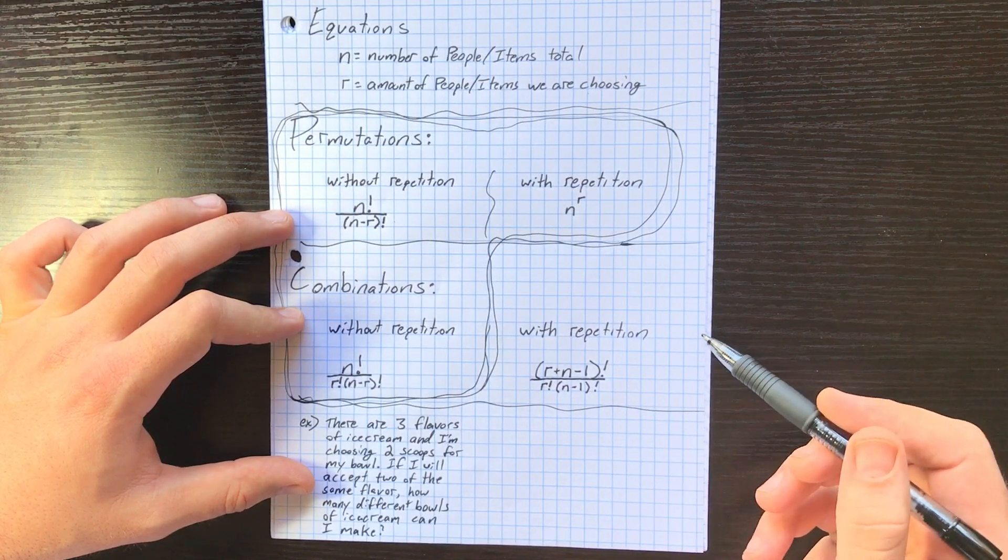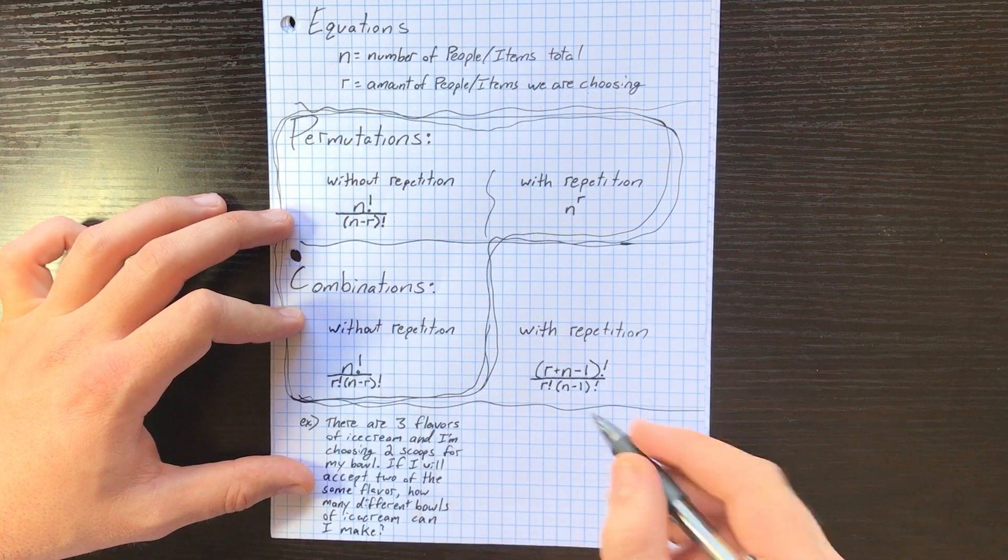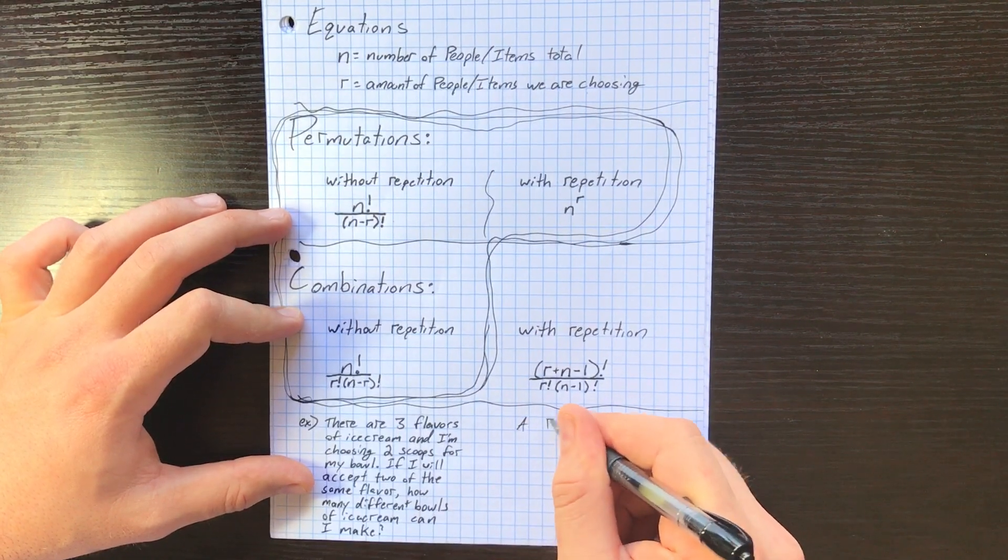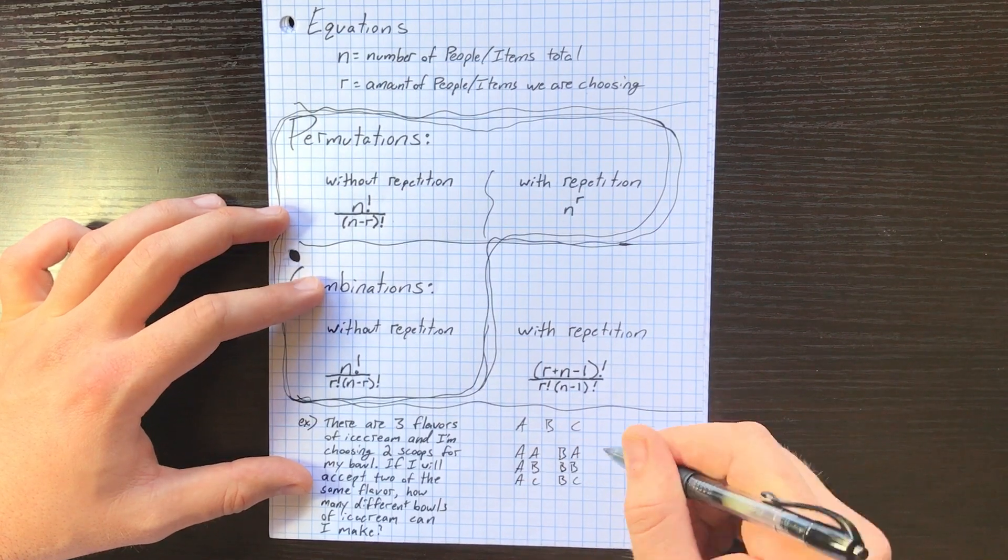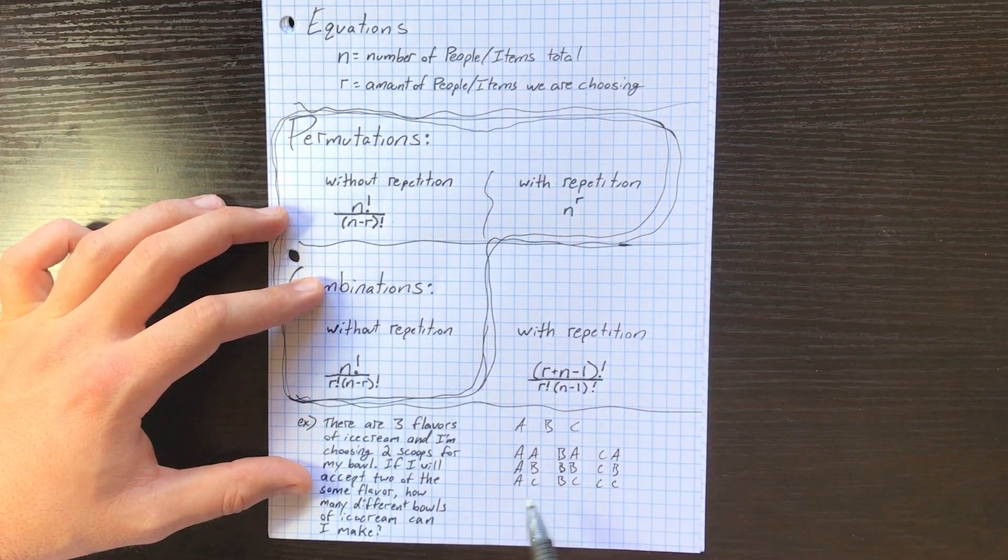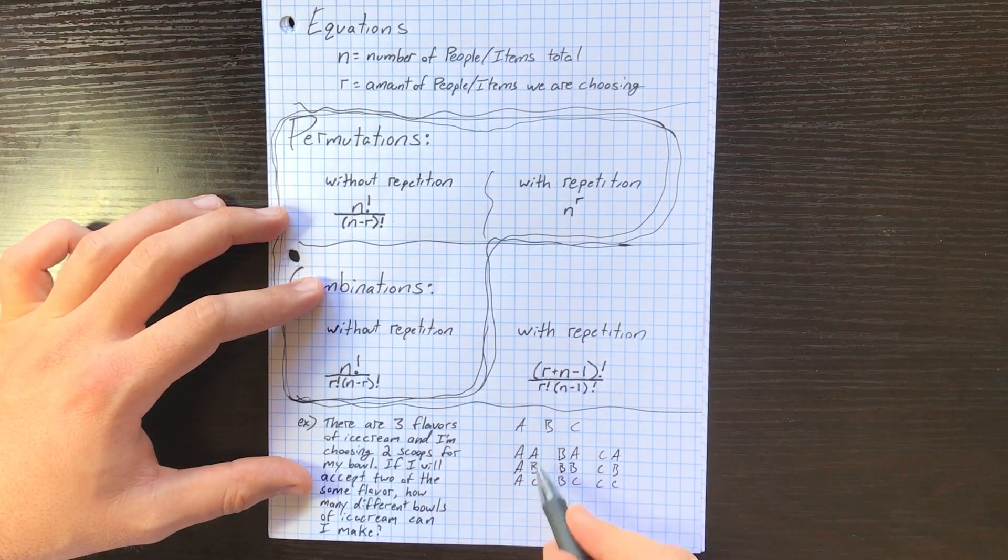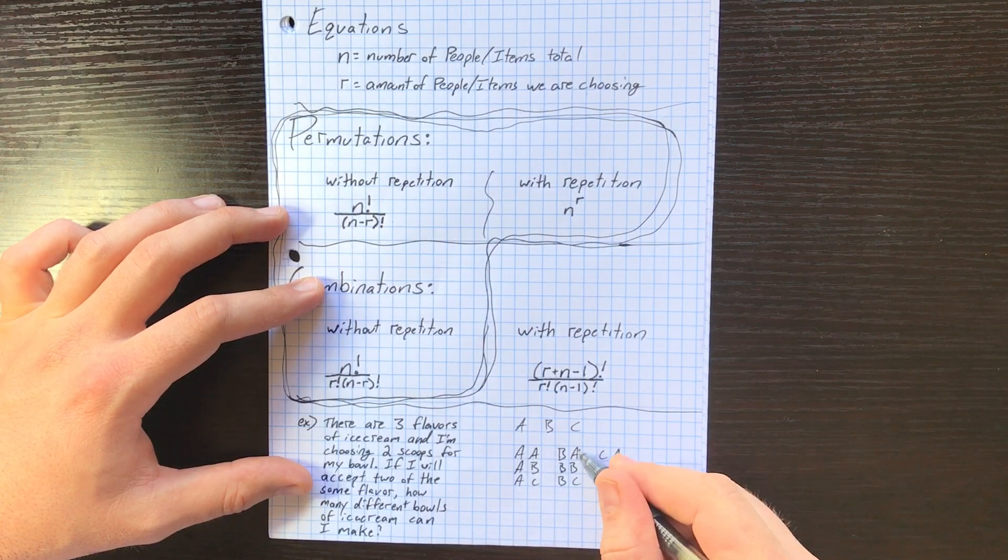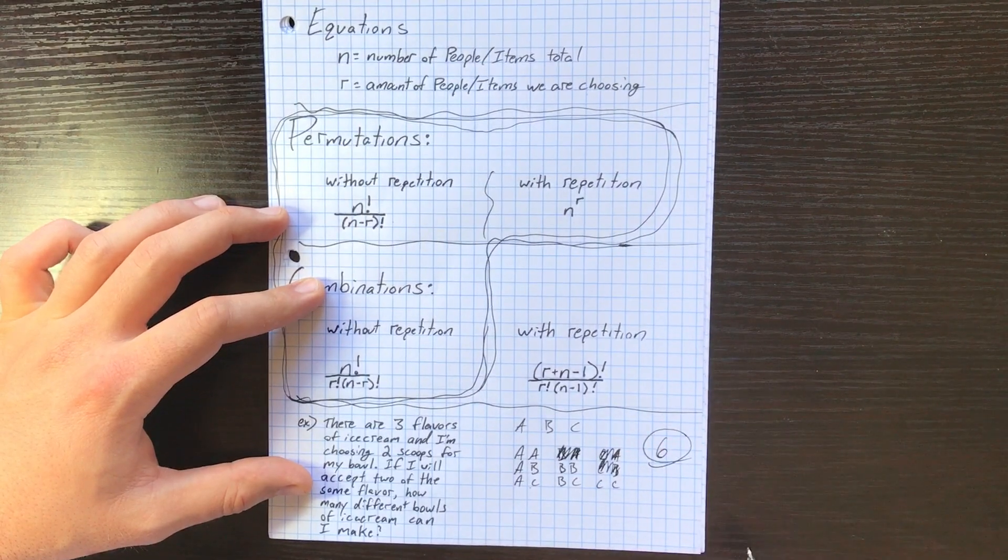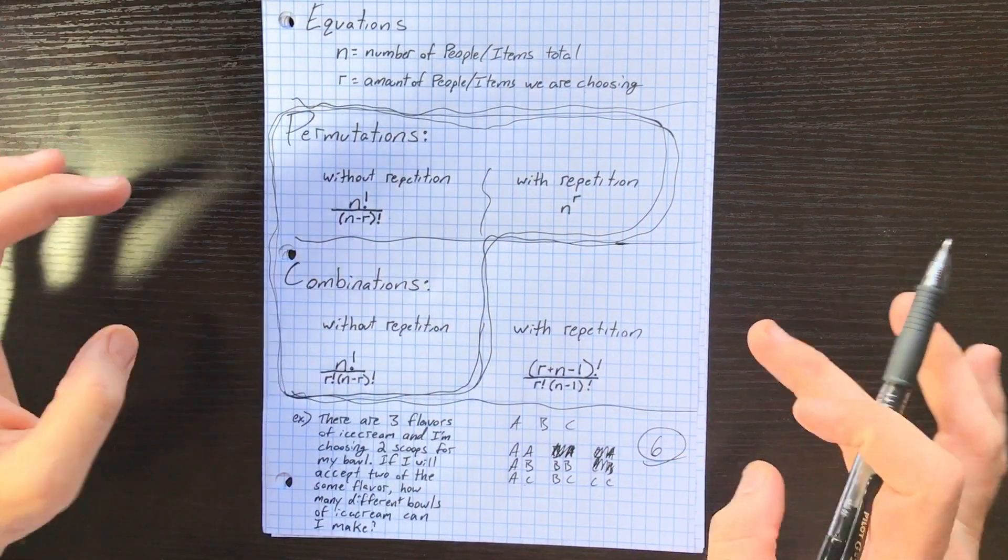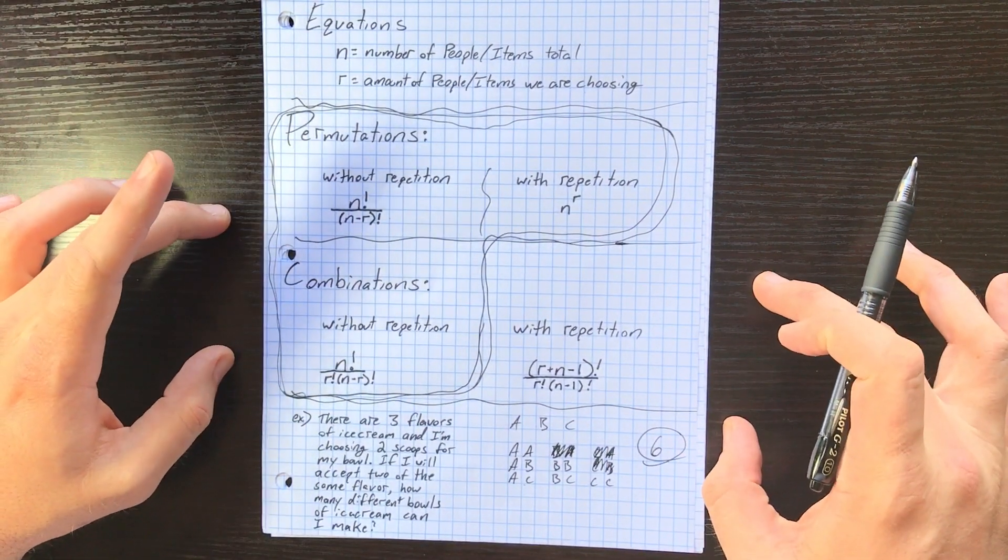I can repeat my flavor, so I could use this equation, or I could just kind of hardwire do it. Like, check it out, we have three flavors: let's say it's A, B, and C. I could have AA, AB, AC, BB, BC, CC. Now I'm just going to erase the duplicates. We already have AB - 1, 2, 3, 4, 5, 6. That's your answer. But yeah, there's a lot of ways to do these problems.